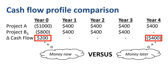Money now versus money later — a classic time value of money situation. Only if we take the $400 expected four years from now and translate it to its present value equivalent today can we really compare the two amounts. That's where we apply capital budgeting techniques such as IRR, the internal rate of return. IRR asks: what is the discount rate that makes the NPV of the two amounts equal to zero?